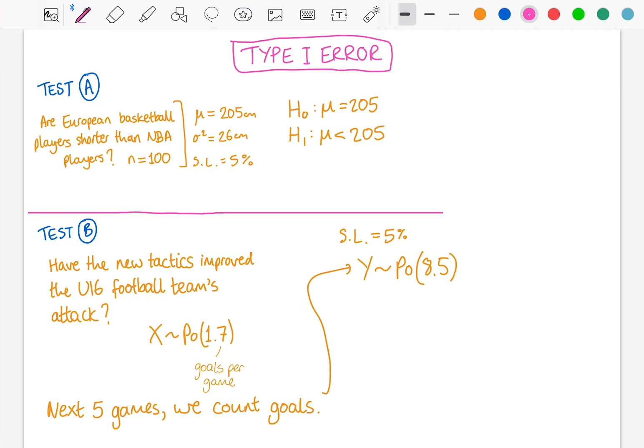So whether you accepted the null hypothesis or rejected it, and which one's wrong or not depends on—well, that tells you whether it's type 1 or type 2 error.